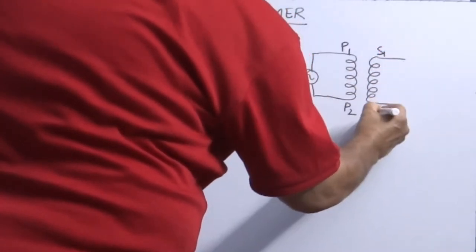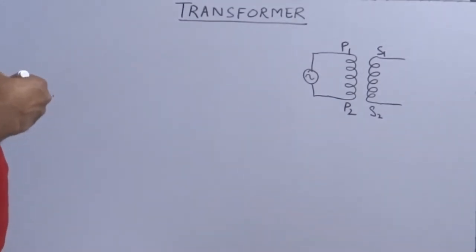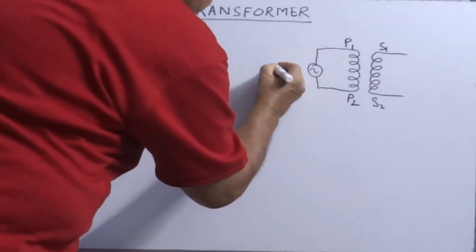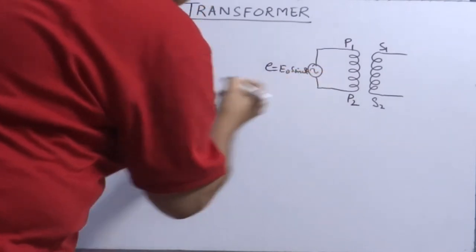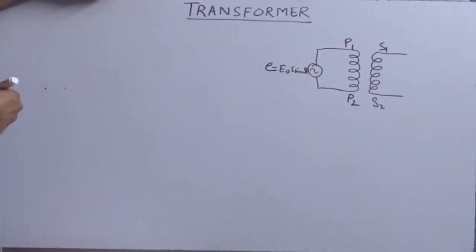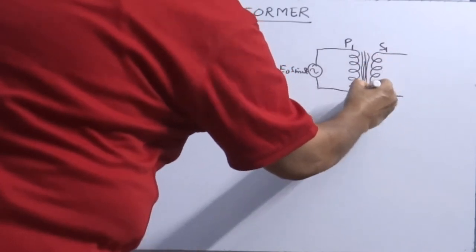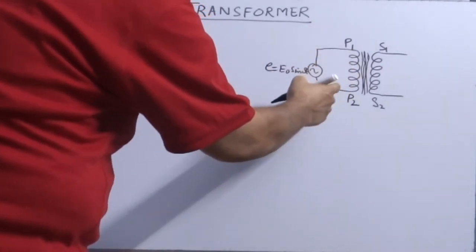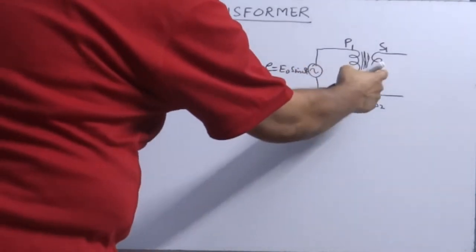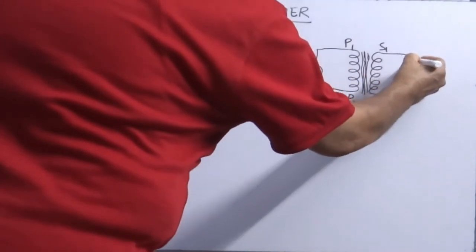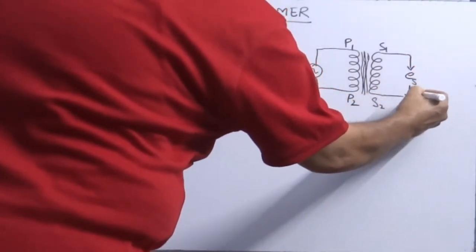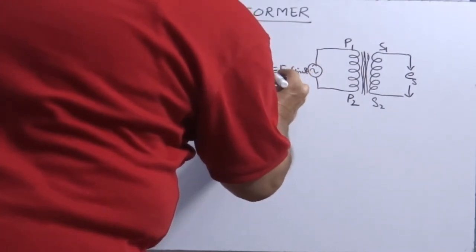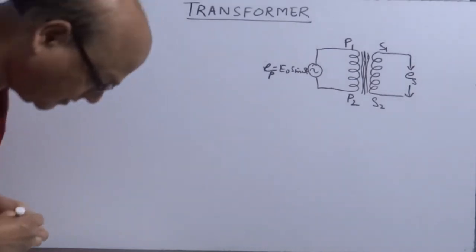We can call it as primary and secondary coil also. This is an alternating EMF source, E is equal to E not sin omega t, which is connected across primary coil. These two coils are bound over a soft iron core. Symbolically we represent with the line soft iron core. So when current, time varying current, is passed through the primary coil P1 P2, the magnetic flux linked with the second coil S1 S2 changes and it induces an EMF across it. So you obtain output voltage ES.